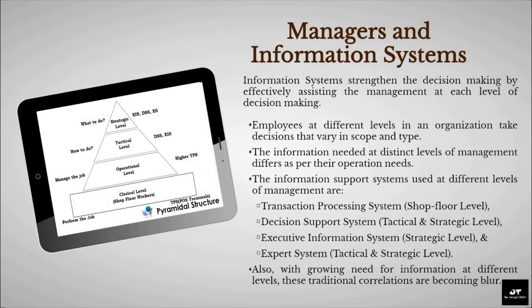Managers and Information Systems: Information systems strengthen decision-making by effectively assisting management at each level. Employees at different levels in an organization take decisions that vary in scope and type. In the pyramidal structure of an organization, the information needed at distinct levels of management differs as per their operational needs. The information support systems used at different levels are: First, Transaction Processing System at shop floor level. Second, Decision Support System at tactical and strategic level. Third, Executive Information System at strategic level. Fourth, Expert System at tactical and strategic level. With growing need for information at different levels, these traditional correlations are becoming blurred.